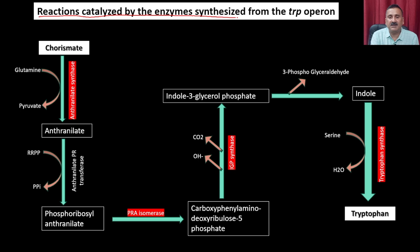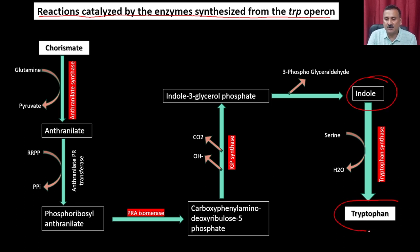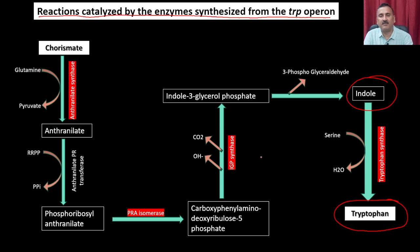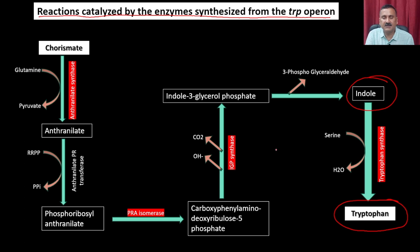The reactions catalyzed by enzymes synthesized from the tryptophan operon lead ultimately to the synthesis of tryptophan from indole, involving the activity of anthranilate synthase, anthranilate transferase, PRA isomerase, IGP synthase, and so on. All these genes are part of the tryptophan operon; we won't discuss in detail since we have already covered tryptophan biosynthesis in the amino acid metabolism section.